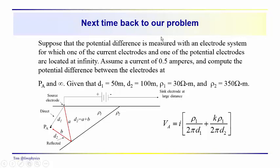So next time we're going to come back and we'll solve that problem. But I would suggest that between now and the next time that you figure out what the potential at A is, given these parameters: that D1 equals 50, that D2 equals 100, ρ1 equals 30Ω-m, and ρ2 equals 350Ω-m. So we'll talk to you later. Thanks for joining us.